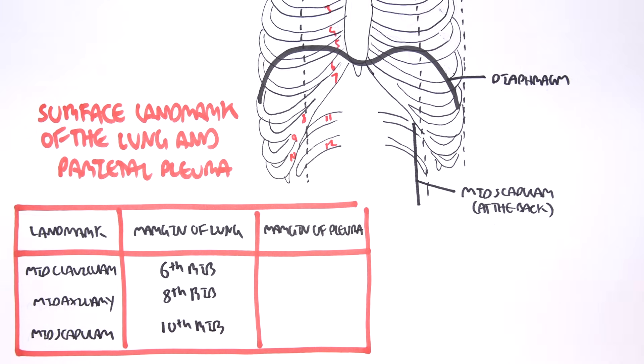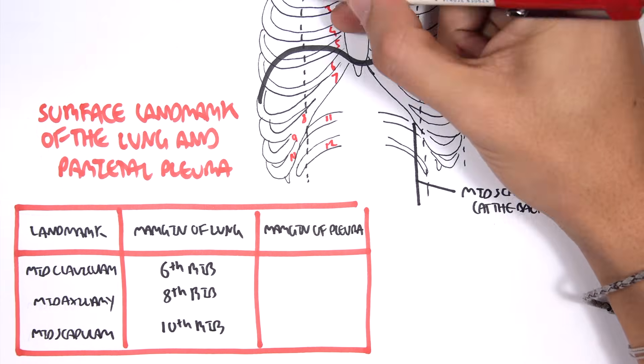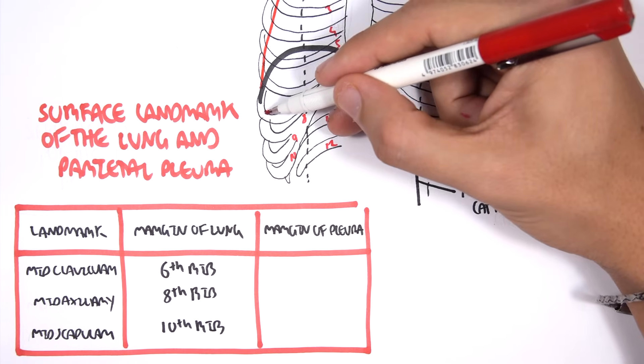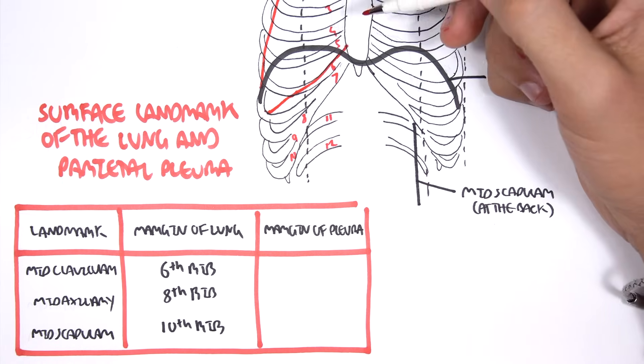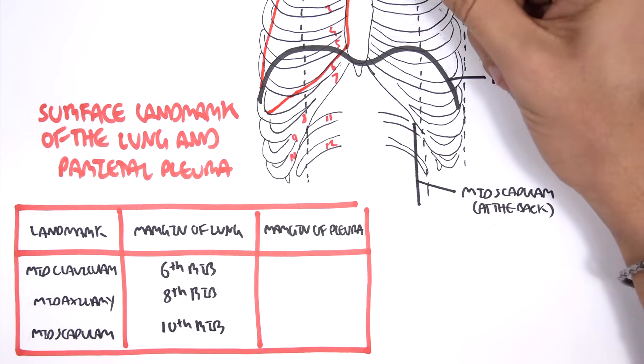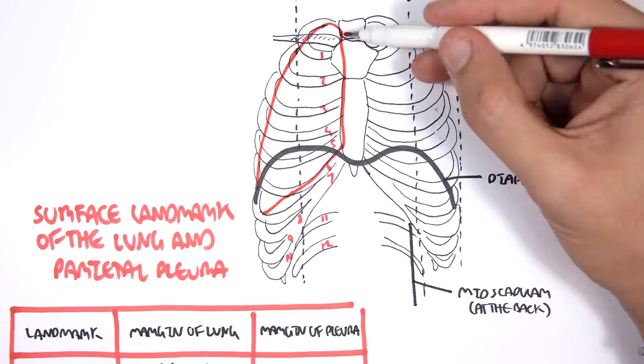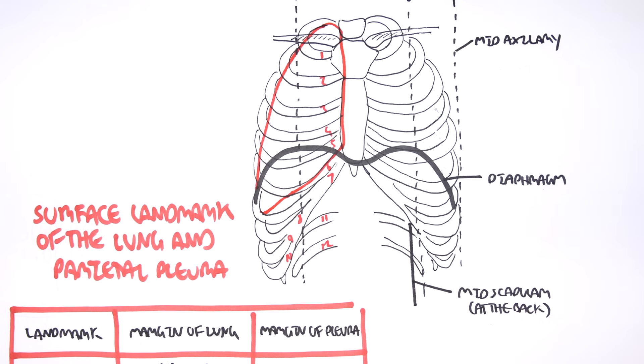So if I were to draw it out on this diagram, it would be something like this. So mid axillary, it goes to the eighth rib, the lung, and then mid clavicular, it is on the sixth rib. And at the back, mid scapula, the lung margin is on the tenth rib.